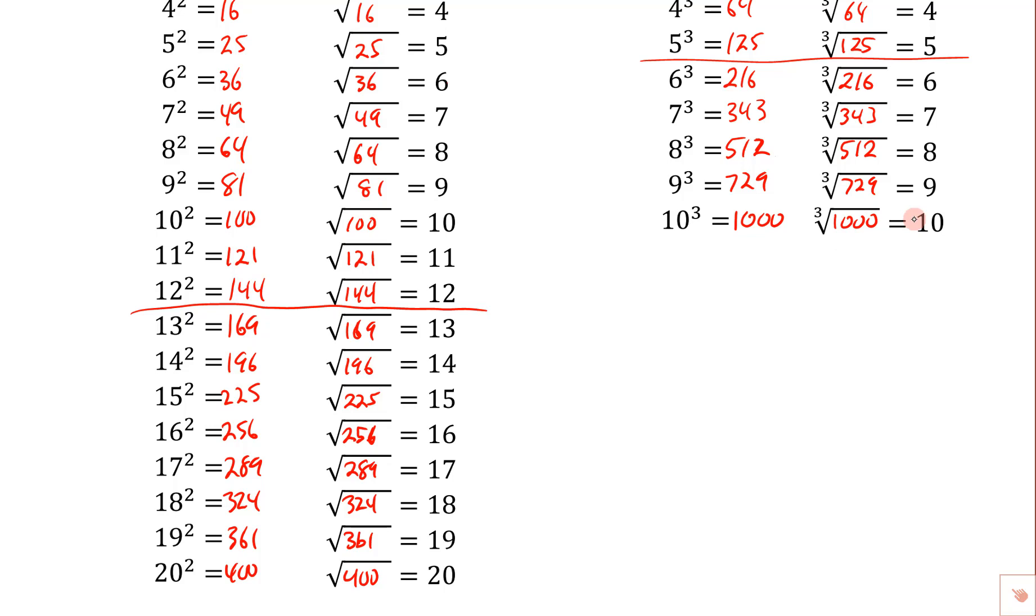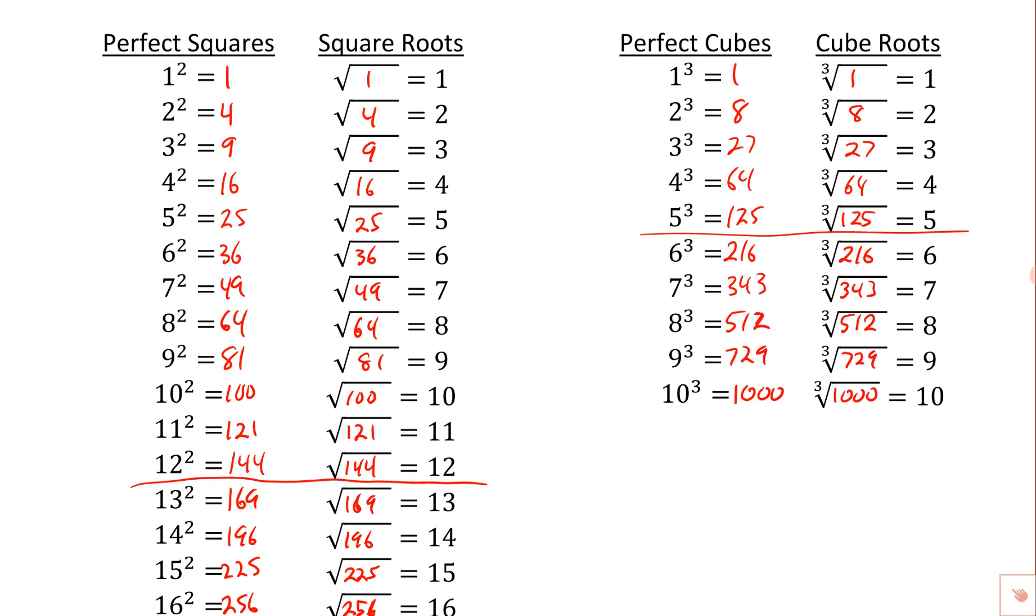All right, please make sure you have those memorized, at least down to the list, be able to recognize those. If you've got these memorized and these memorized, you're in great shape. The bottom part of the list, if you at least can recognize those when they come up, it's like oh yeah, that's a perfect square, and then you can work on it that way, even if you don't have them memorized. All right, thanks.